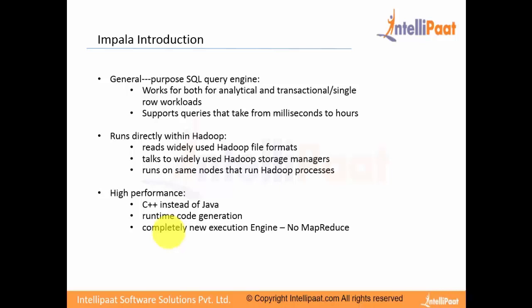Impala runs directly with Hadoop. It reads widely used Hadoop file formats — for example, Avro, Parquet, JSON, flat file format, and other row and columnar data stores. It talks to widely used Hadoop storage managers and runs on the same nodes that run the Hadoop processes. Impala uses the same cluster that other Hadoop jobs are using — notably those written in Java MapReduce, Pig, or Hive. But please note that Impala does not use MapReduce at all. Impala is a high-performing engine built in C++ instead of Java. It enables runtime code generation and is a completely new execution engine.